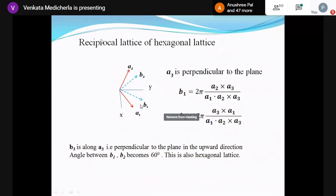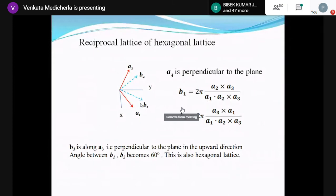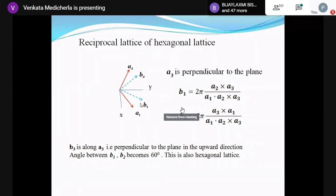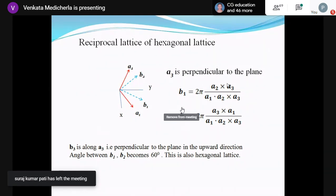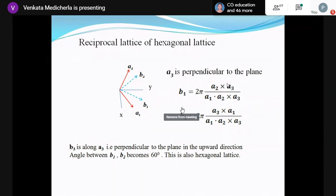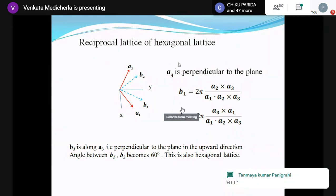b1 makes a 30 degree angle with the y-axis in the downward direction. You can calculate the direction of b1. a2 cross a3 will give you b1. Similarly, b2 will be a3 cross a1. If you do a3 cross a1 — taking a3 as perpendicular to the screen — you will get a direction along b2 which is perpendicular to a1.